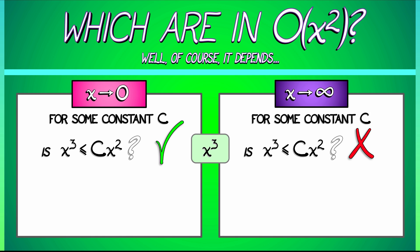So, x cubed, not in big O of x squared as x goes to infinity. Now, at this point, you might be thinking, I get it. For any function, it's going to be in big O of x squared in one limit but not the other.